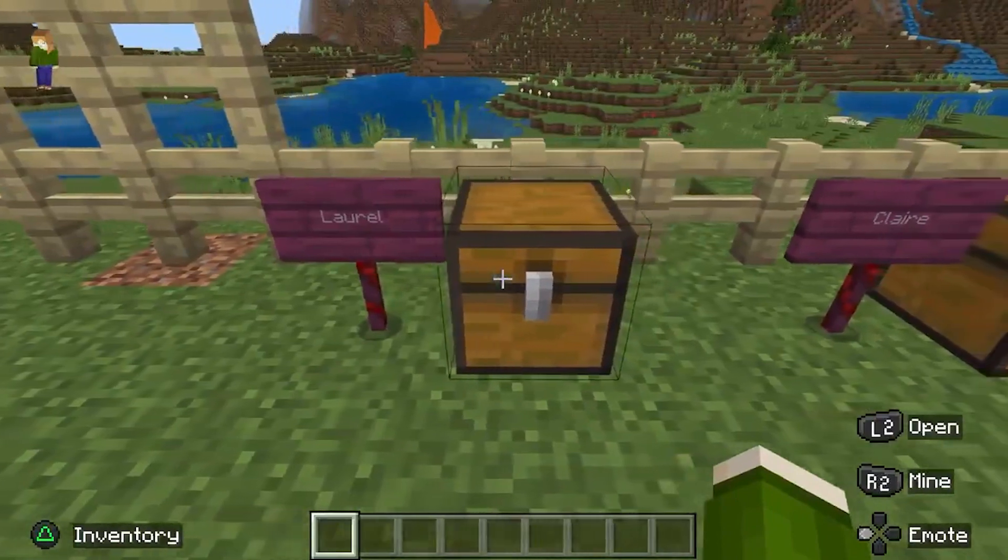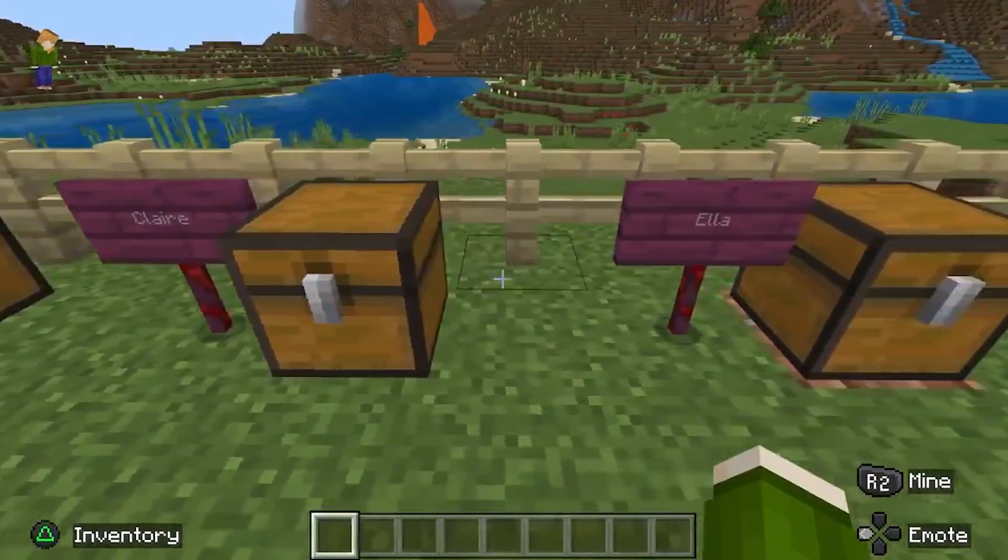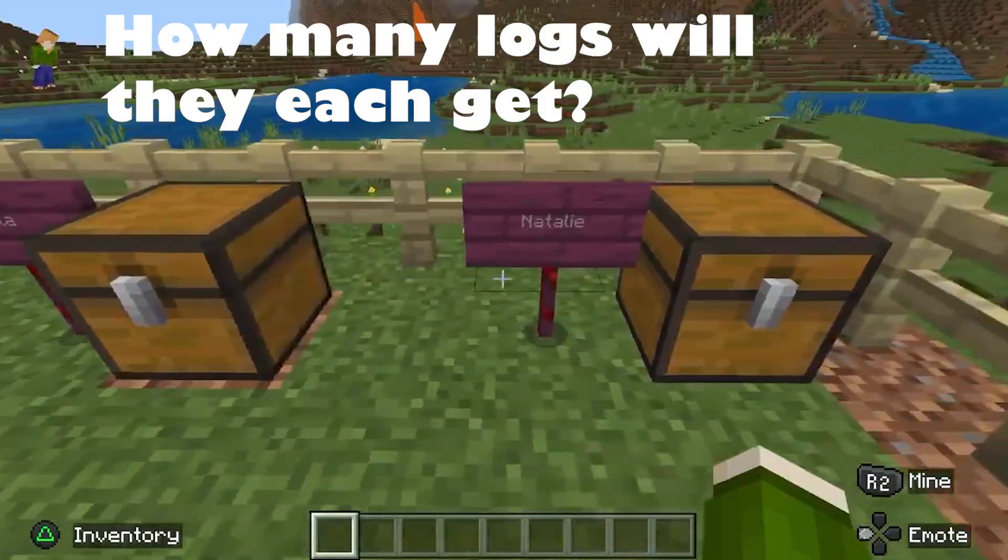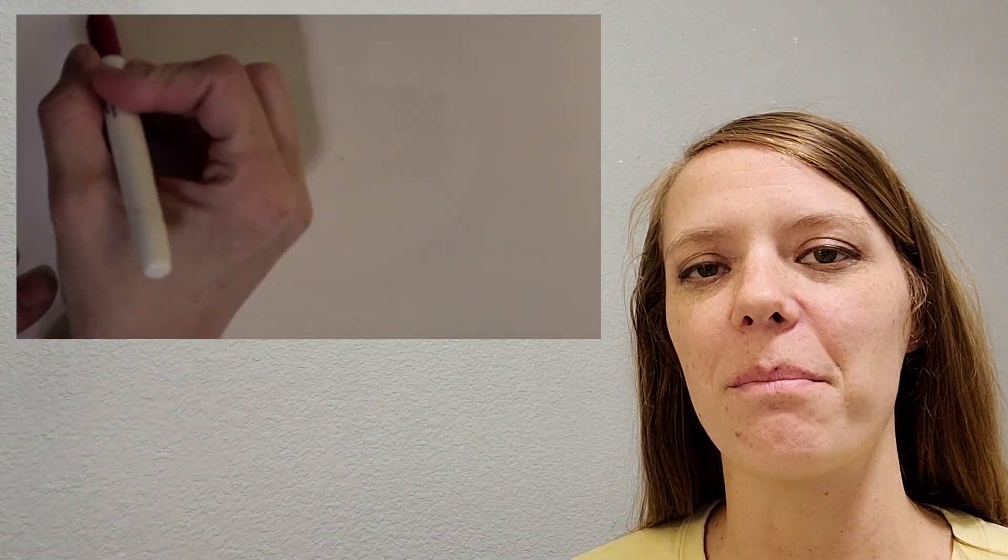So Laurel, Claire, Ella, and Natalie, let's find out how many logs they'll each get. All right, so let's get started with our first problem. So 56 divided by four.